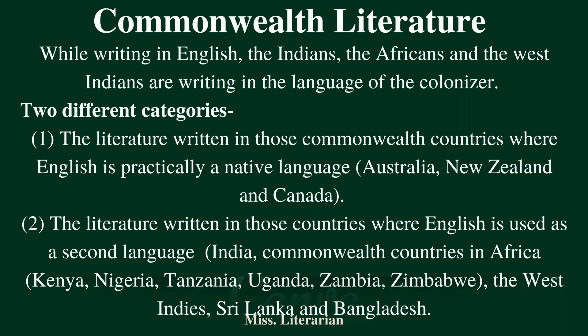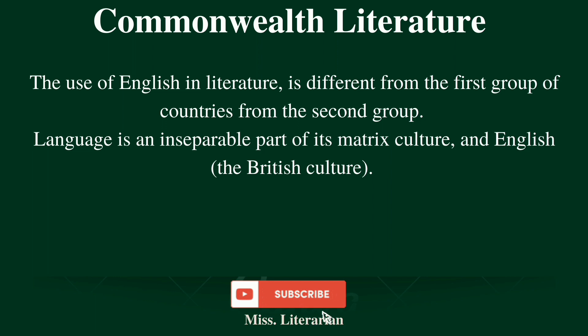Commonwealth literature can be usefully studied in two different categories. One is the literature written in those Commonwealth countries where English is practically a native language, for example in Australia, New Zealand, and Canada. The second is the literature written in those countries where English is used as a second language or even as a foreign language, for example in India and similar Commonwealth countries in Africa like Kenya, Nigeria, Tanzania, Uganda, Zambia, Zimbabwe, and similarly in West Indies, Sri Lanka, and Bangladesh.